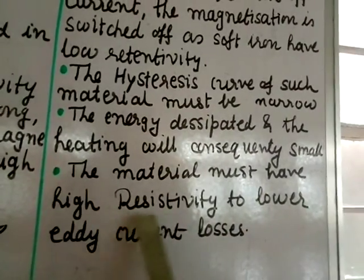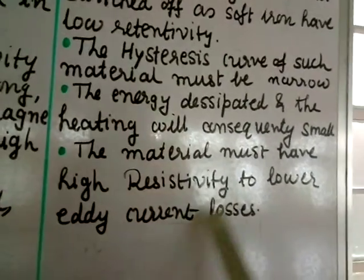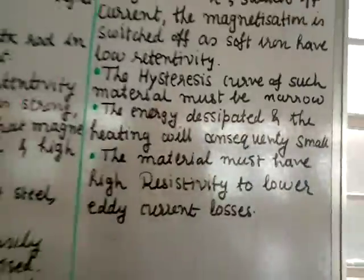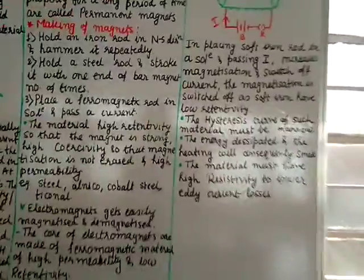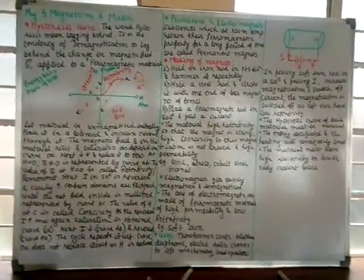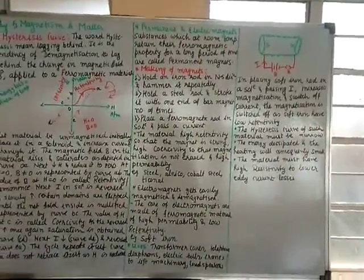The material must have high resistivity to lower eddy current losses. So this is about permanent magnet and electromagnet. And this is the last topic in your chapter. So we complete chapter 5, magnetism and matter with this. Thank you very much.